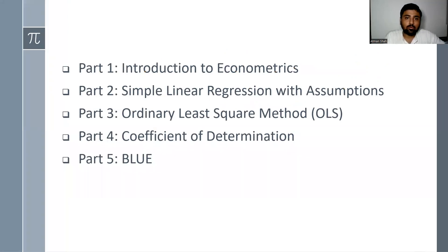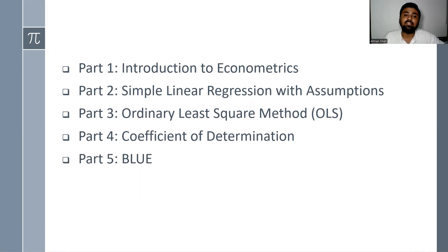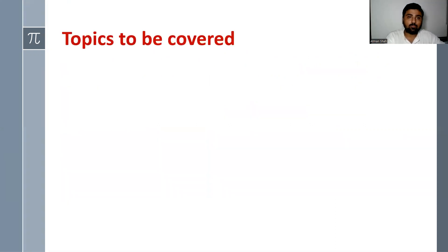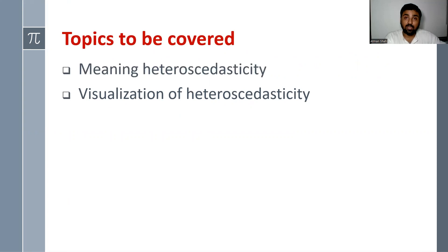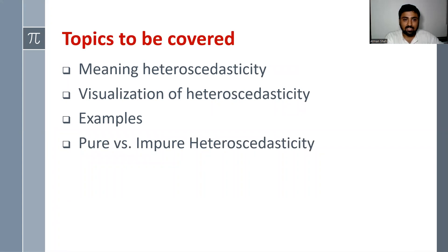In the first five videos, I've discussed the idea of econometrics, simple linear regression model with its assumptions, ordinary least square method, coefficient of determination, and best linear unbiased estimator. Today, I'm going to discuss the meaning of heteroscedasticity, how to visualize the issue of heteroscedasticity, examples, pure versus impure heteroscedasticity, and sources of heteroscedasticity.